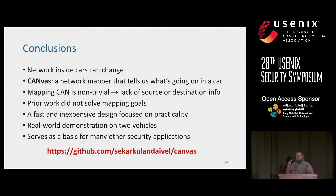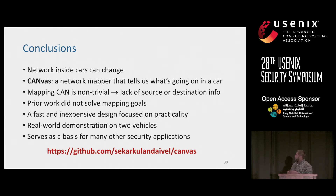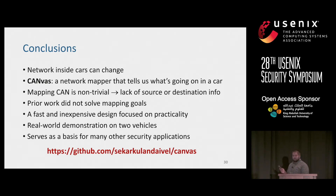To conclude: the network inside cars is no longer static — we've seen three scenarios where that can change. We built CANVAS, a network mapper that tells you what's going on in your car. CAN makes the mapping problem challenging due to the lack of source or destination information, and prior work did not achieve these goals in the context of network mapping. We have a fast and inexpensive design with a focus on practicality, two real-world demonstrations, and we hope CANVAS can serve as a basis for future security applications.